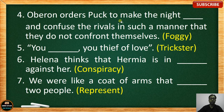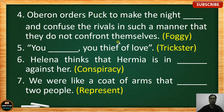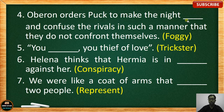Number 4: Oberon orders Puck to make the night blank and confuse the rivals in such a manner that they do not confront themselves. The correct answer is 'foggy' — Oberon orders Puck to make the night foggy.